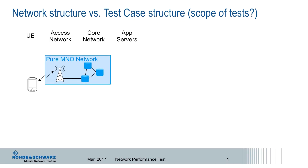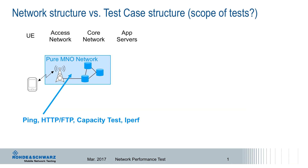In mobile network testing we are distinguishing between different test case classes and scopes. In blue here is the pure mobile network operator network — the base stations and the packet core, and some very close servers that are fully under control of the mobile network operator. Concerning test cases we have here a ping test, HTTP, FTP cases, capacity tests, iPerf, and so on.